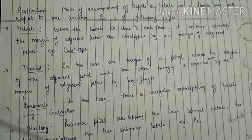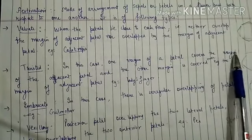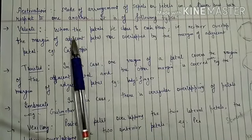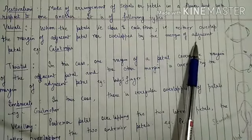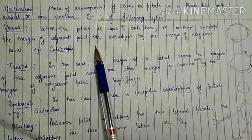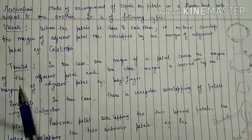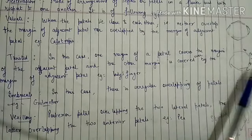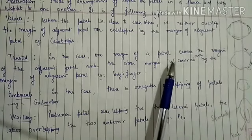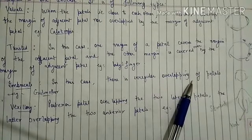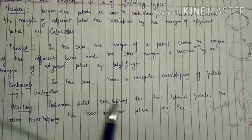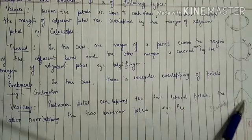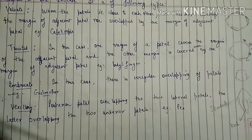To revise: aestivation is the mode of arrangement of petals or sepals in a flower bud with respect to one another. In valvate, petals simply touch with no overlapping. In twisted, one margin covers the adjacent petal while the other is covered by another adjacent petal. In imbricate, there is irregular overlapping. In vexillary, the posterior petals overlap the lateral petals, which in turn overlap the anterior petals. That is all for today, take care everyone.